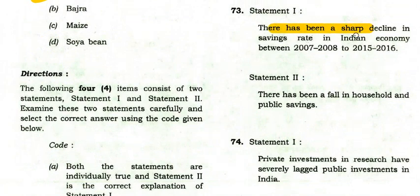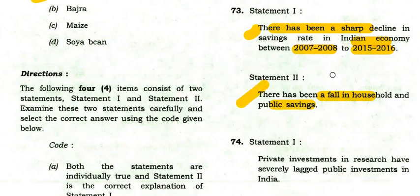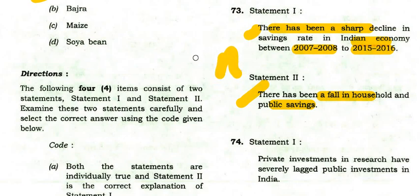There has been a sharp decline in the saving rates in the Indian economy between 2007–08 and 2015–16 — true. Reason: there has been a fall in household and public saving — that explains the fall. Both statements are true and option A is right.